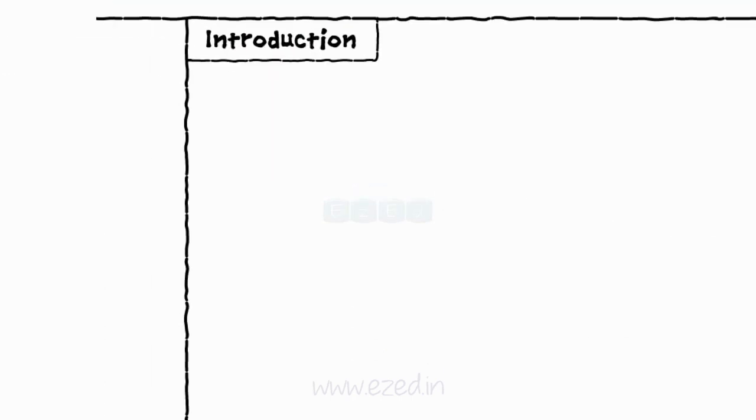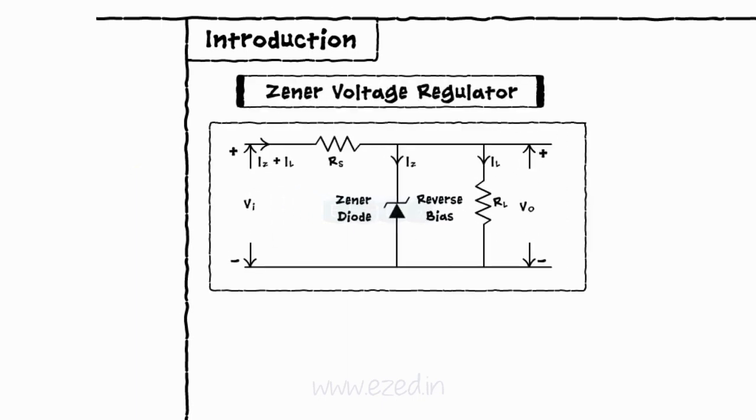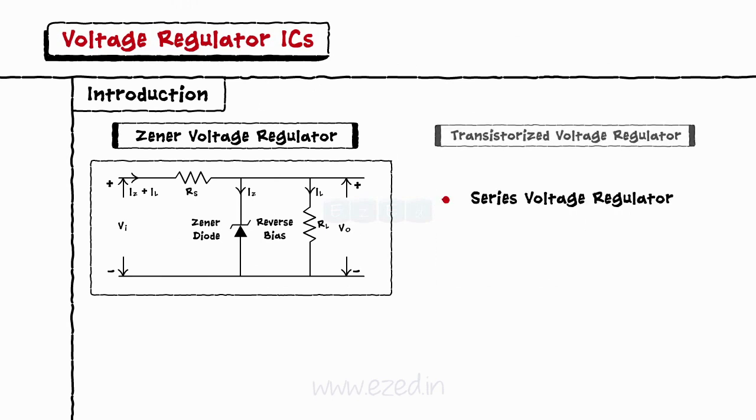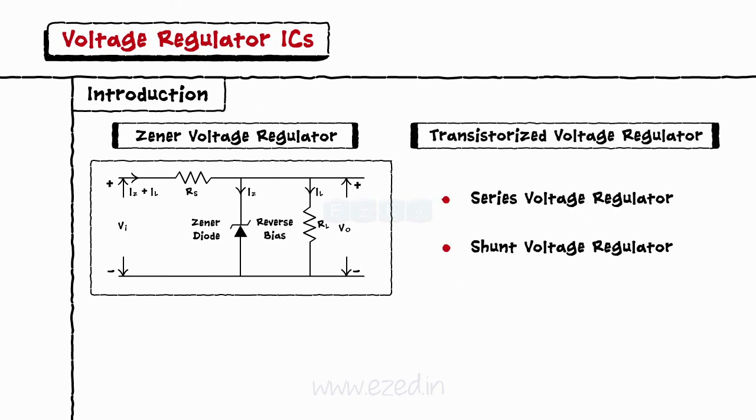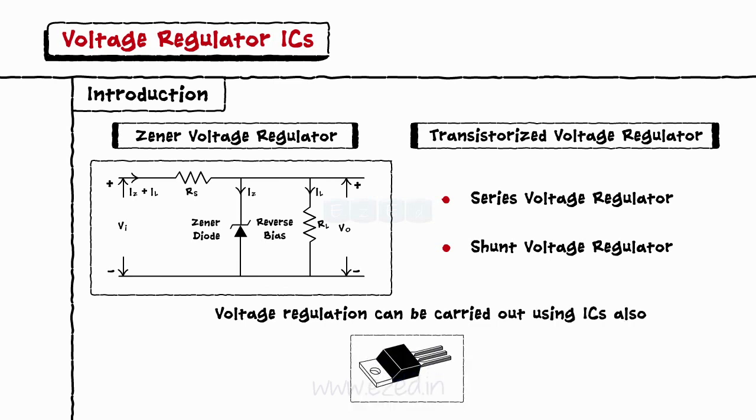Let's start with the introduction. In the previous chapter, we have already seen the Zener voltage regulators and transistorized voltage regulators. But voltage regulation can be carried out using ICs also. Such ICs are called as voltage regulator ICs.